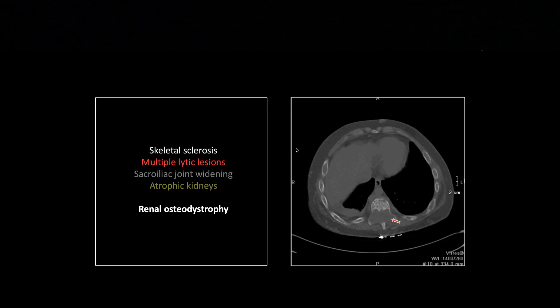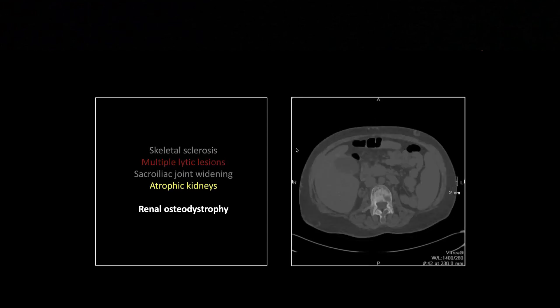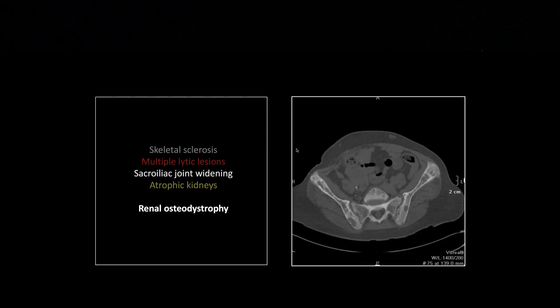This patient is far enough advanced that they have also developed brown tumors from a state of constant hyperparathyroidism. They ultimately get these large masses of skeletal cells that represent the rapid turnover of the skeletal system. Here you can see the kidneys are shrunken down to little nubbins consistent with chronic renal disease.